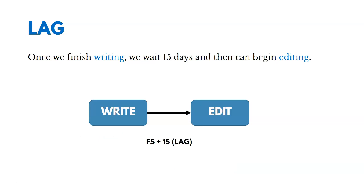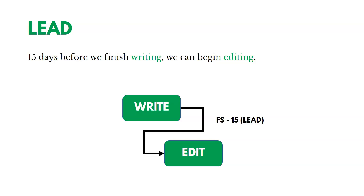Another lag example: once we finish writing, we wait 15 days and then can begin editing — there's a wait there. Here's an example of a lead: 15 days before we finish writing, we can begin editing. This is a finish-to-start relationship, but we can start 15 days early — we can advance the successor activity, so we can start editing before writing is finished. This is represented as finish-to-start minus 15, meaning we can start 15 days early.